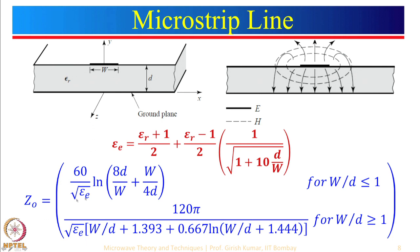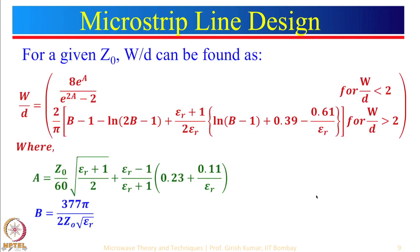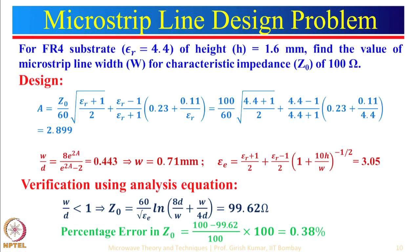Because of the fringing fields, an effective dielectric constant is present which is slightly less than the dielectric constant of the substrate, because the wave is not completely confined inside the dielectric material — part of the field is in the air. We also looked at how for a given value of W one can find the characteristic impedance using the analysis equation, and the design problem where Z0 is given and we need to find W/H. In a design example with a substrate and characteristic impedance of 100 ohm, W came out to be 0.71 mm and epsilon effective was 3.05, which is less than 4.4.